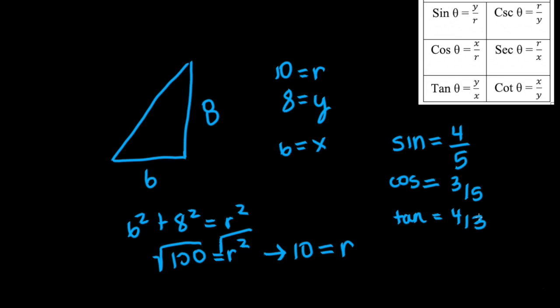Now let's find the reciprocals of these numbers. So the cosecant, which is the reciprocal of sine, is going to be 5 over 4. The secant, which is the reciprocal of cosine, is going to be 5 over 3. And the cotangent, which is the reciprocal of tangent, is going to be 3 over 4.